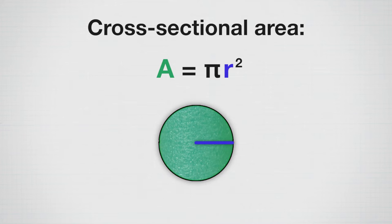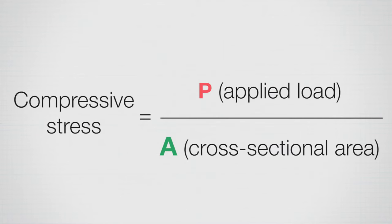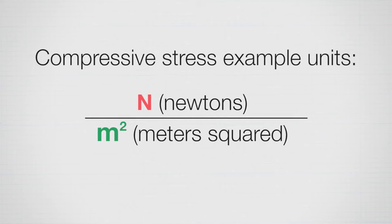And then I can use those values to calculate my compressive stress. So my compressive stress would be the applied load, P, divided by the cross sectional area. The units will be force over area or newtons per meter squared, as an example.